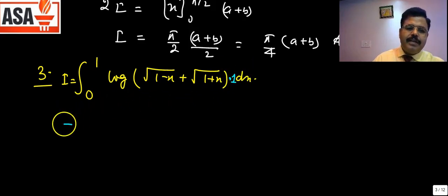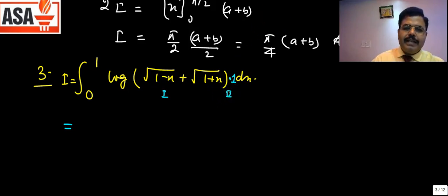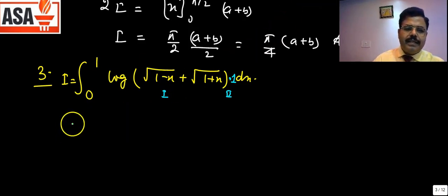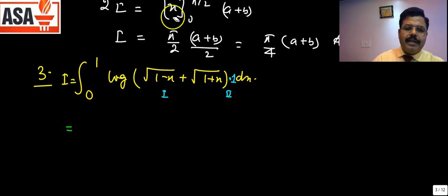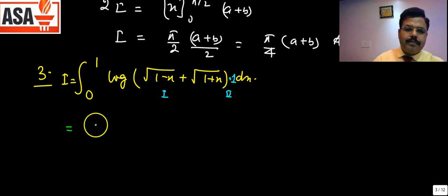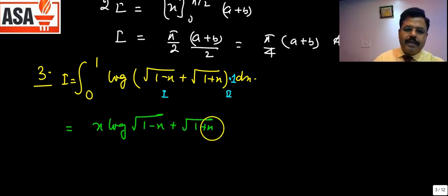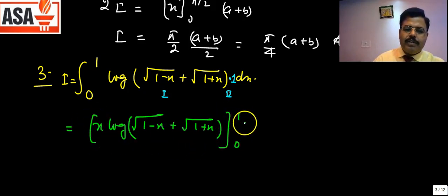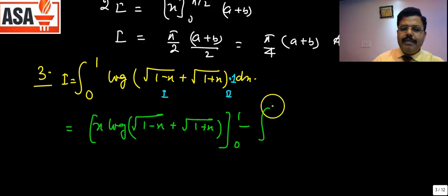Taking log(√(1−x) + √(1+x)) as the first function and 1 as the second function, and applying integration by parts: the first function as-is multiplied by integration of the second (which is x), evaluated from 0 to 1, minus the integral of [derivative of first × integral of second].